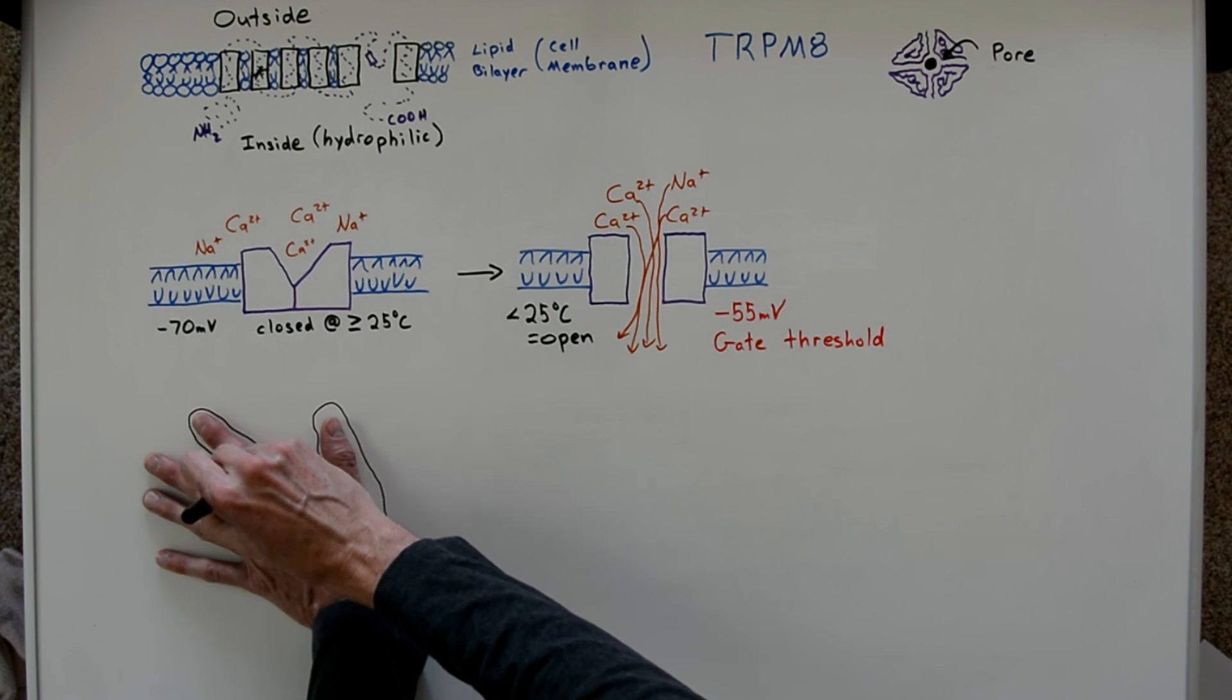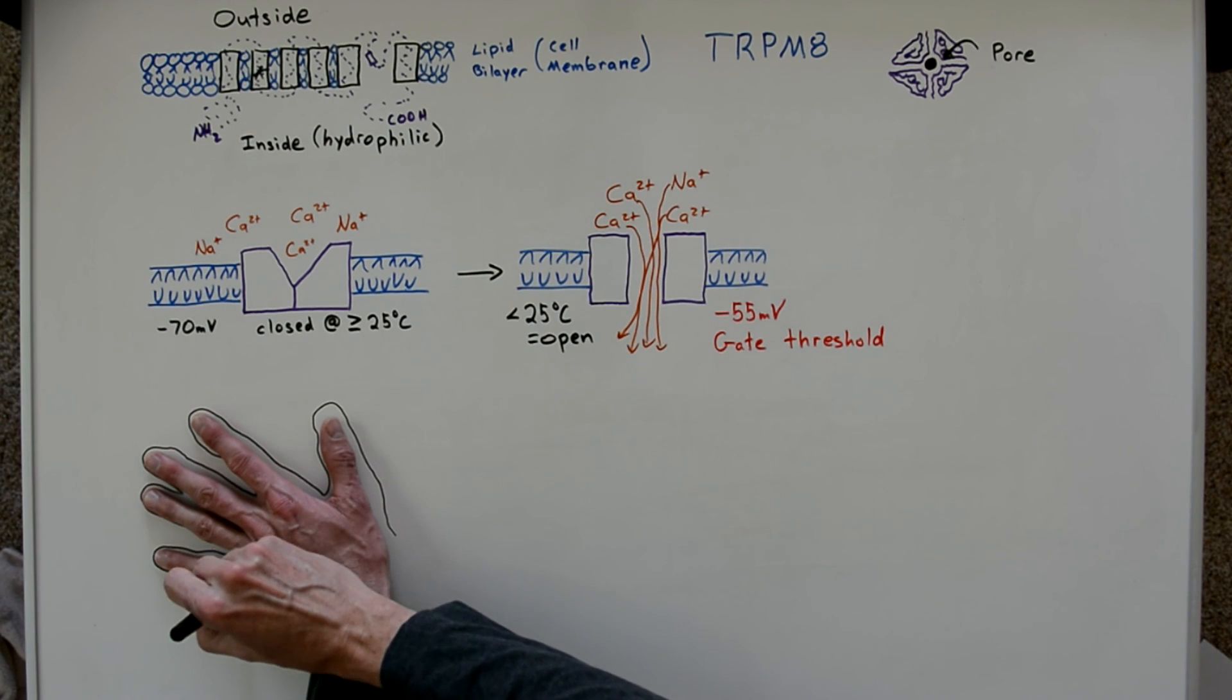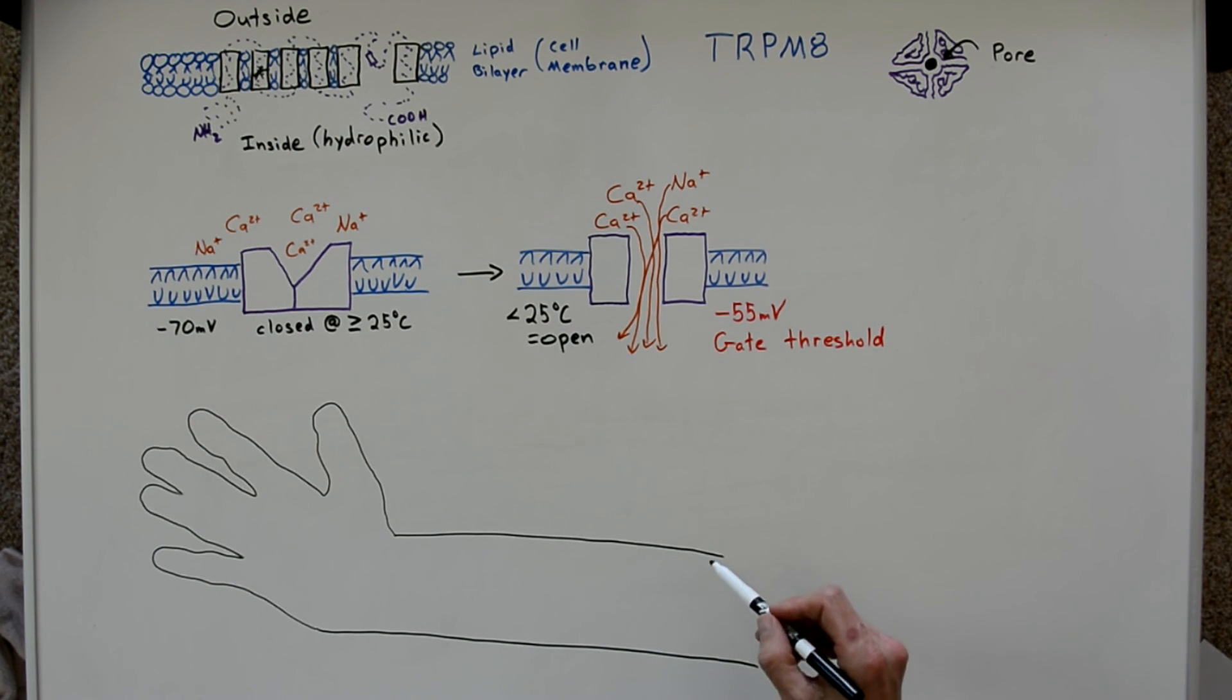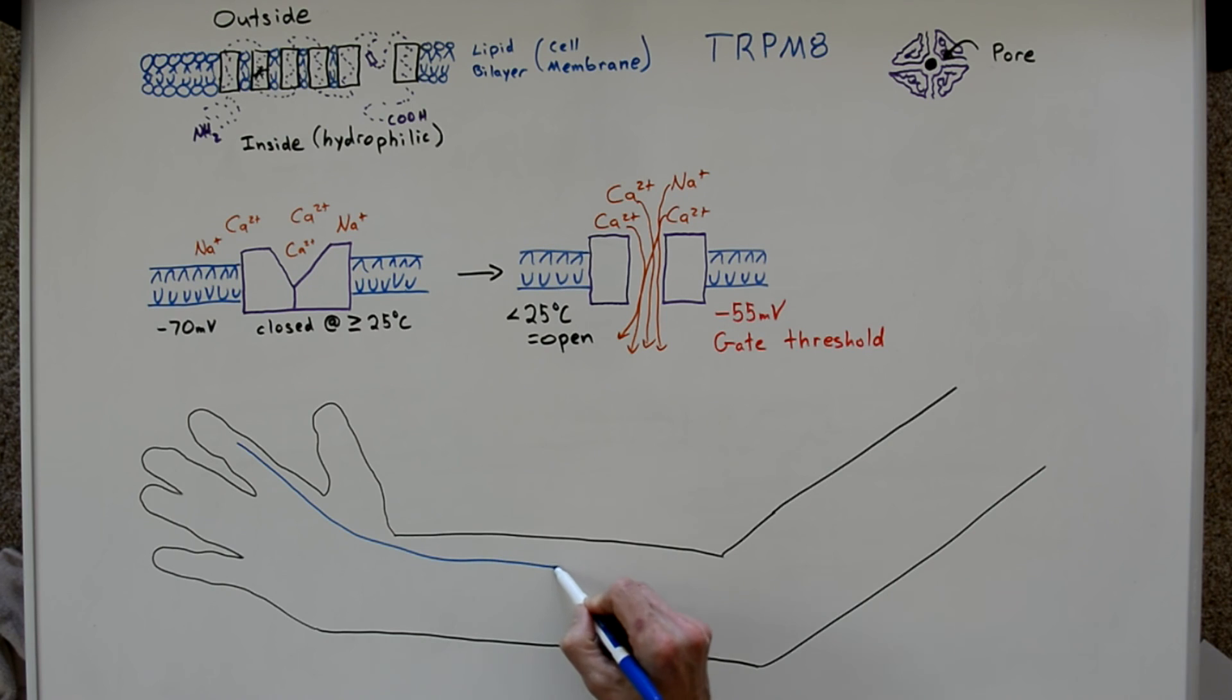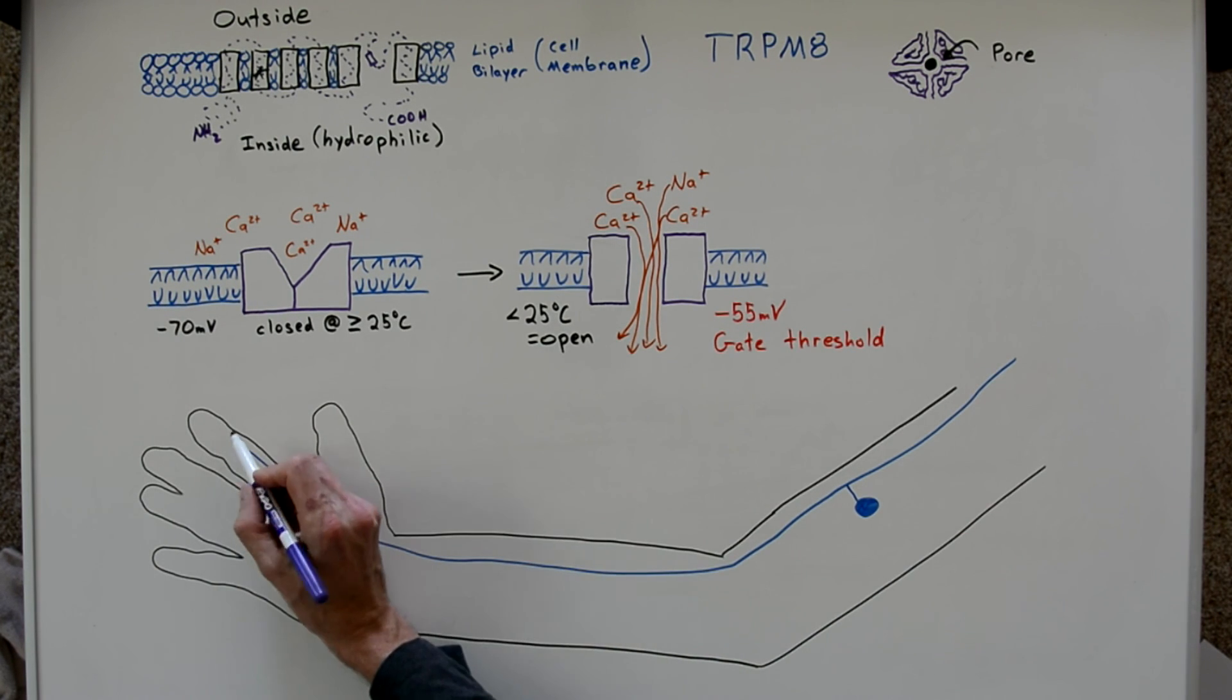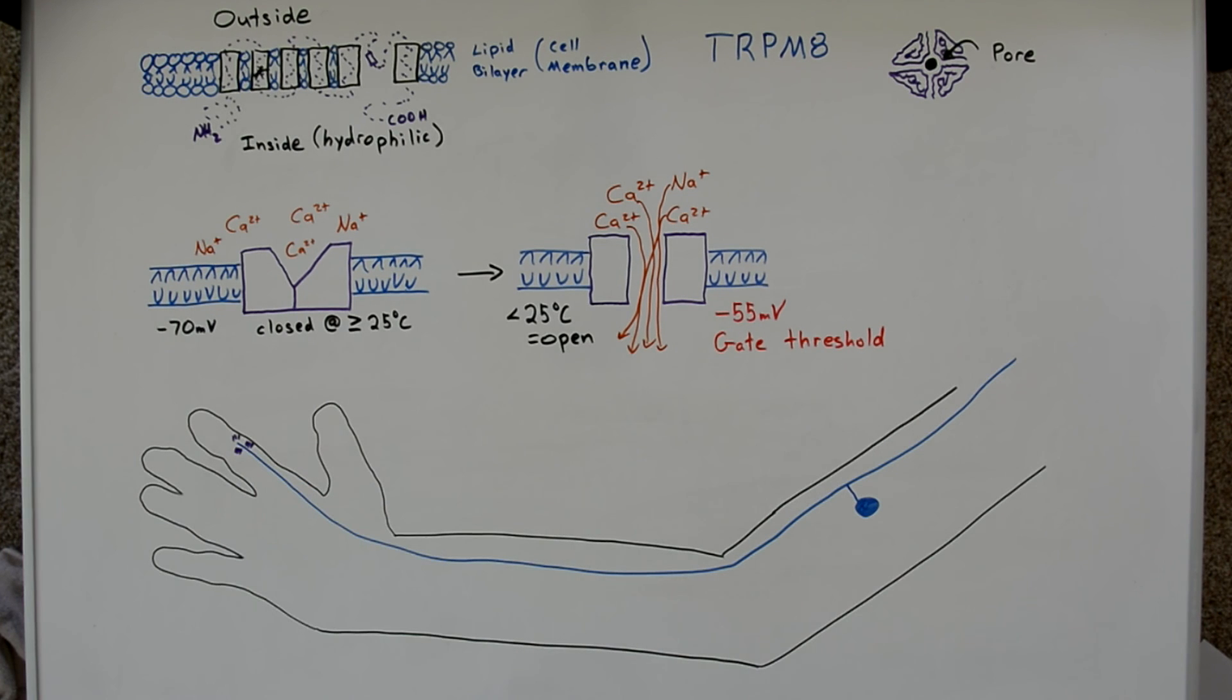So before we end the lesson, I want to focus a little bit on how these TRPM8 proteins are specifically designated to get into the tip of the finger. And how exactly do they get there? So as you know, there's a long axon going from the fingertip up to the spinal column. And up in the upper arm is the cell body.